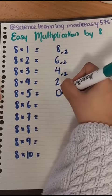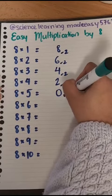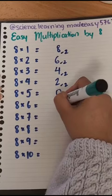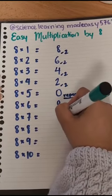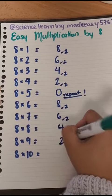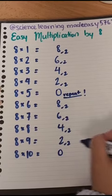And here is where the trick comes in. You're going to repeat. Then 8 minus 2 is 6. Minus 2 is 4. Minus 2 is 2. And 0.